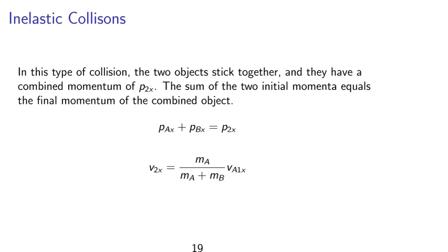Inelastic collisions. In this type of collision, the two objects stick together and they have a combined momentum of p2x. The sum of the two initial momentum equals the final momentum of the combined object. So we have pax and pbx, the initial momentums. And p2x is the final momentum. In solving, we can obtain the final velocity in terms of va1x.